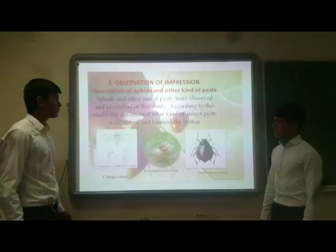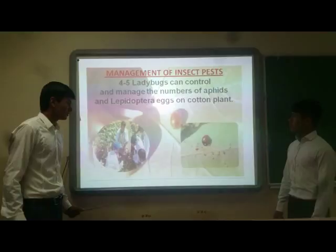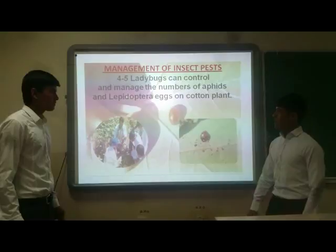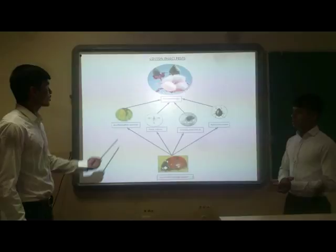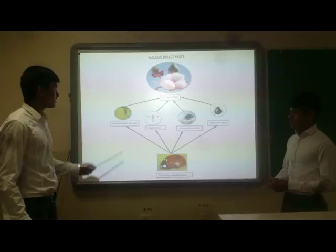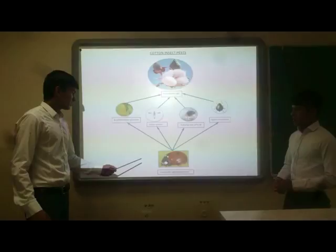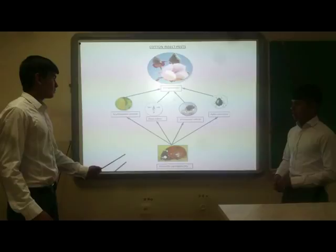In the last method, management of insect pests, we determined that four or five ladybugs can control and manage the number of aphids and Lepidoptera eggs on cotton plants. This is a picture of a cotton insect pest — there is a harmful insect and there is damage in the cotton plants. And here, the seven-spotted ladybug is consuming the harmful insect.